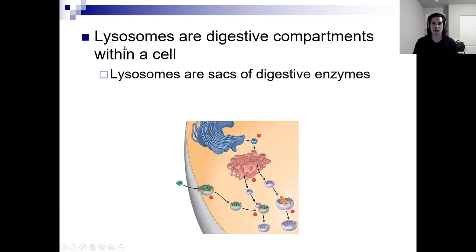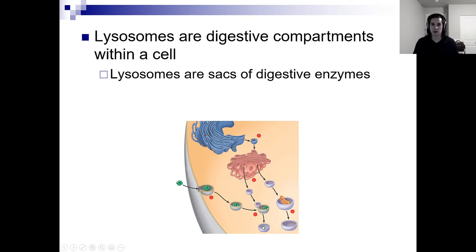Lysosomes are your digestive compartments — the recycle bins. They're sacks of digestive enzymes. For example, your rough ER makes some proteins, sends them to the Golgi, and the Golgi could send them as a lysosome. Meanwhile your cell engulfs something from outside via phagocytosis — it's combined with the lysosome and digested, breaking down the food into base components. Also, if you have a dysfunctional mitochondria, you can engulf it and fuse it with a lysosome loaded with enzymes to break it down and harvest it for parts.